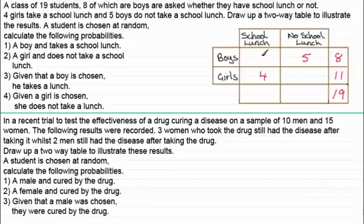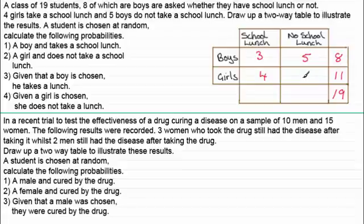It's very easy now to fill in the remaining cells. If we've got a total of eight boys with five having no school lunch, that leaves three who do take school lunch. For the girls we've got 11 total, four take school lunch, so seven girls do not take school lunch. For the totals: school lunch is three plus four, which is seven; no school lunch is five plus seven, which is 12. And seven plus 12 gives us 19 again as a useful check.